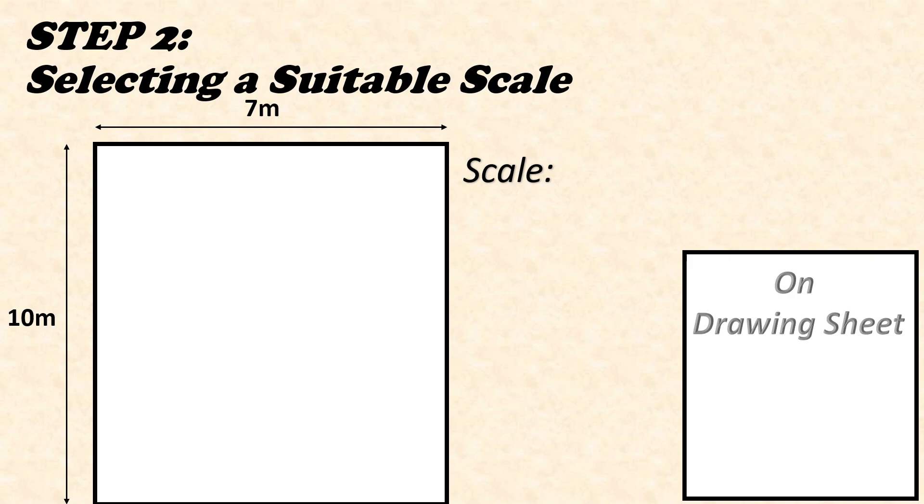At first we'll try with 1 meter equals 2 centimeter scale. Here we'll have to draw a vertical line of 10 meters, that is 20 centimeters, and a horizontal line 7 meters, that is 14 centimeters, as our scale is 1 meter equals 2 centimeters. Now let us assume that this 20 centimeter line does not fit on our drawing sheet.